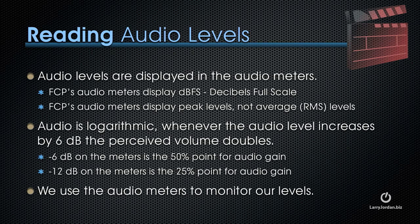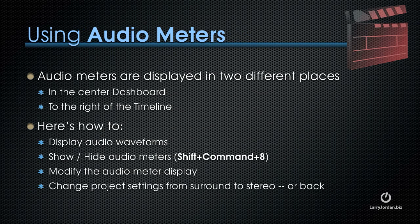We'll talk about mixing later in this chapter. Audio meters are displayed in two different places: in the center dashboard and to the right of the timeline within Final Cut Pro 10. Let me illustrate how to display audio waveforms, how to show or hide the audio meters — the keyboard shortcut is Shift-Command-8 — how to modify the audio meter display, and how to change project settings from surround to stereo or back.